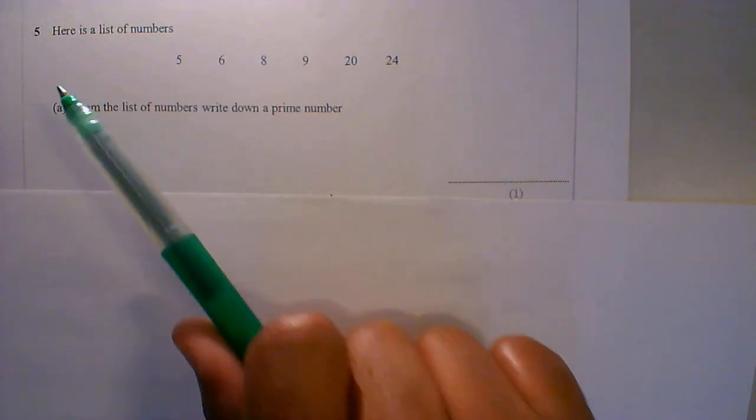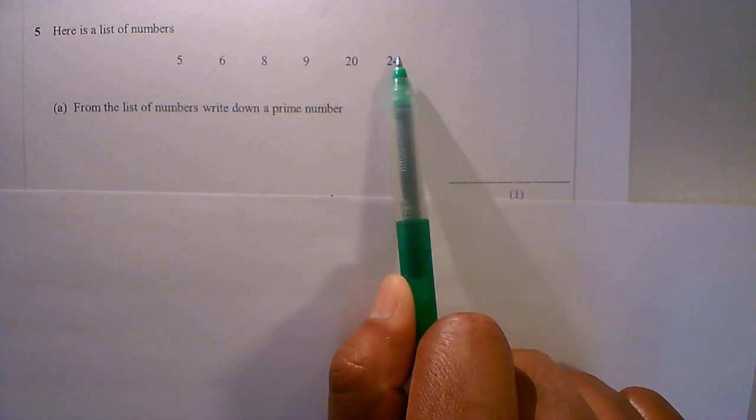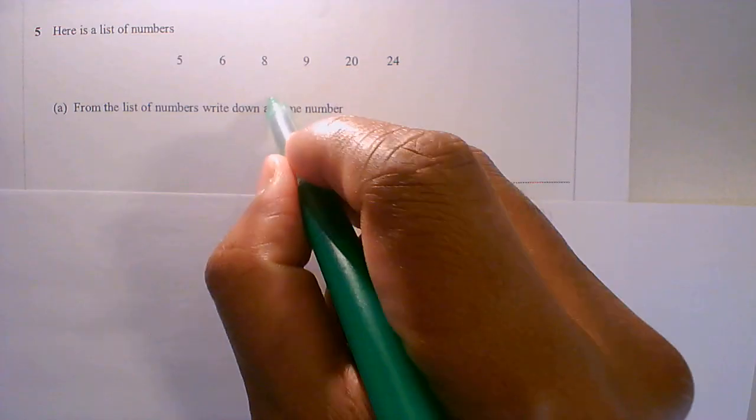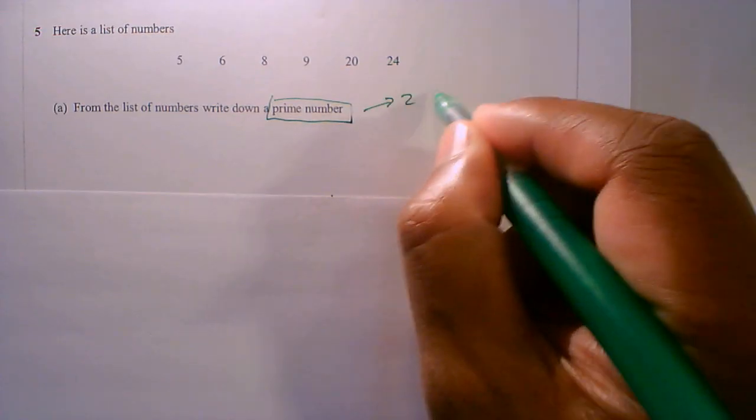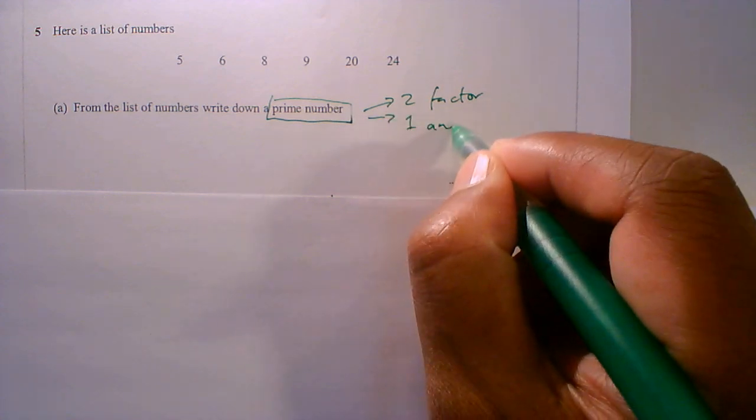Question 5a. Here is a list of numbers: 5, 6, 8, 9, 20, 24. From the list of numbers, write down a prime number. A prime number has two factors, one and itself.